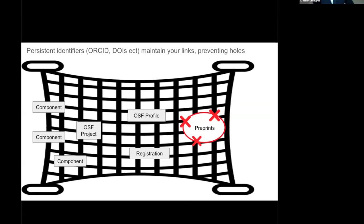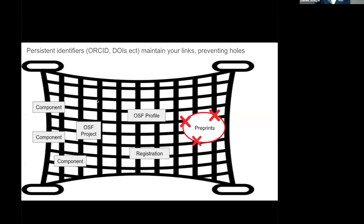Have you ever been reading a research paper or publication, and it says here's a link to my data or a link to a project associated with this publication — you're really interested in that, you click on it, and it ends up being a broken link? That broken link is like a hole in the net of trying to catch researchers coming into your work. Instead of everything on your OSF profile being connected, you now have a gap where someone might come to your preprint and not be able to find everything else. That's really unfortunate.